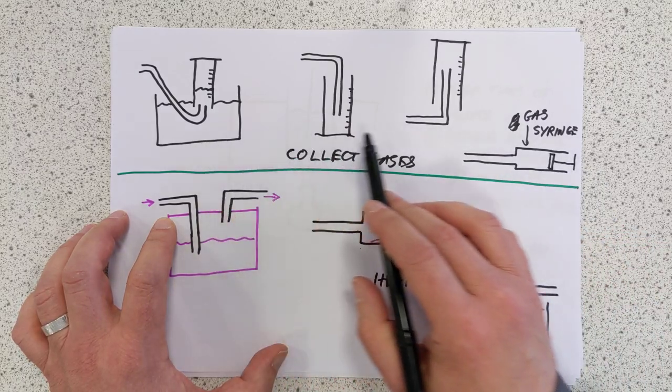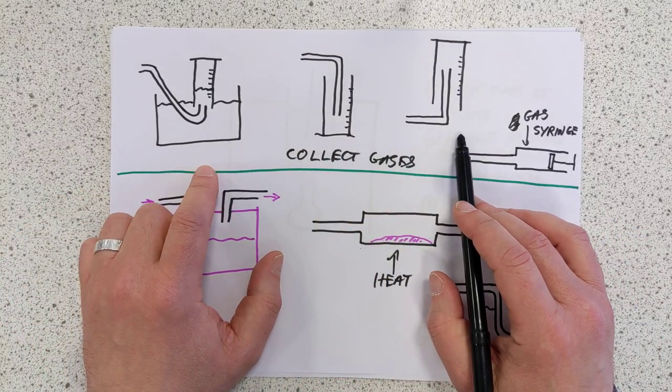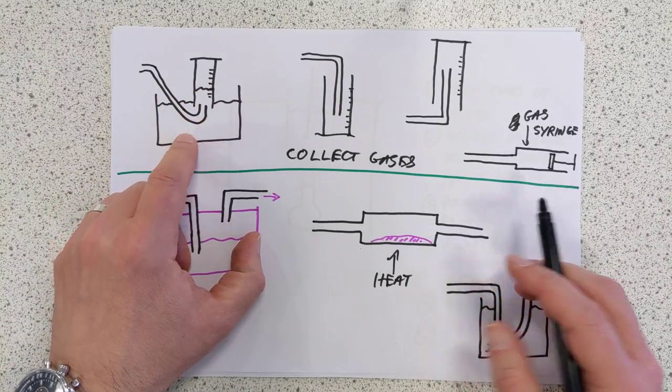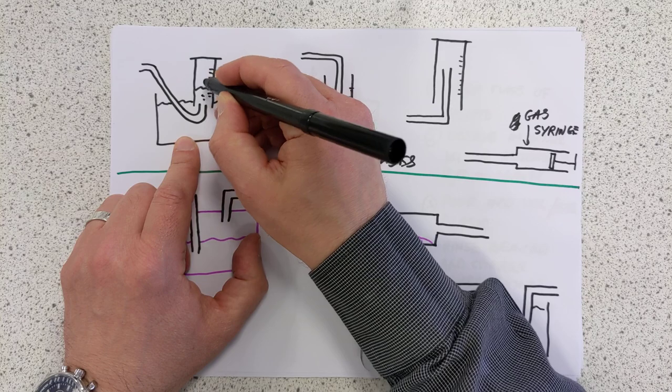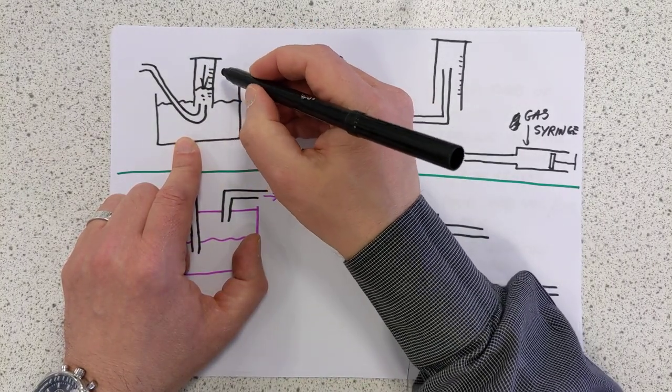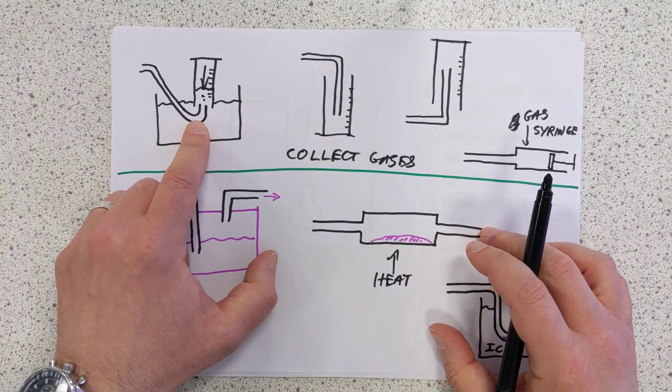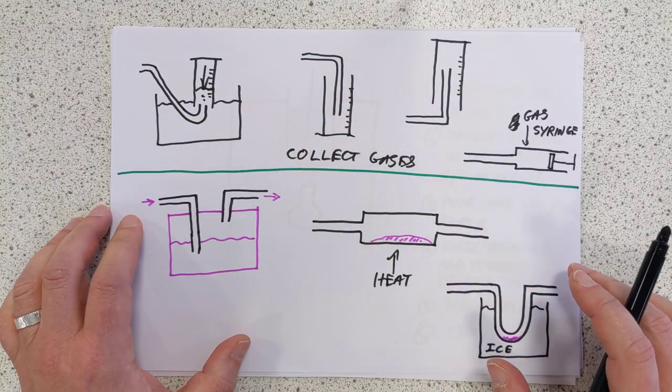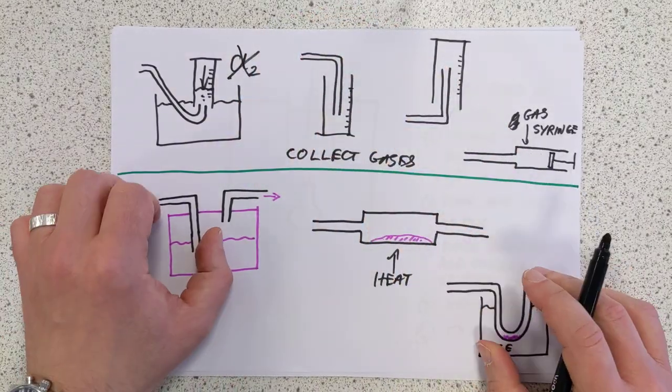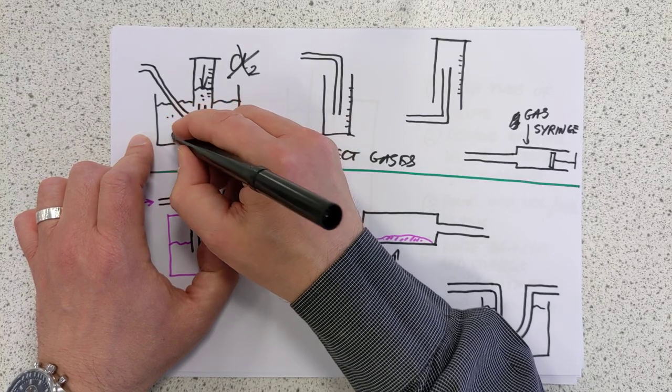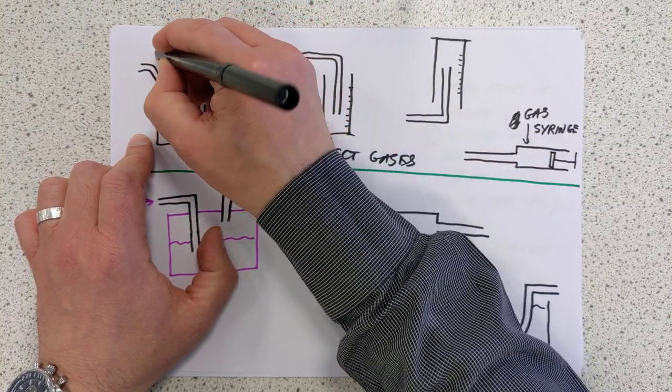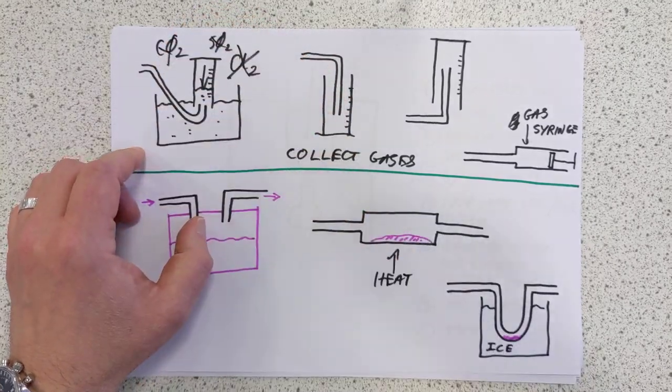This one here is called collecting the gas above water. So the gas bubbles through this tube here, it builds up in here, pushes the water down, and you get a measuring cylinder full of your gas. The only problem is, this does not apply to gases like chlorine, for example, because chlorine dissolves really well in the water. Sulfur dioxide as well, that's another one. Carbon dioxide, in fact. You shouldn't even collect carbon dioxide by bubbling it through water.